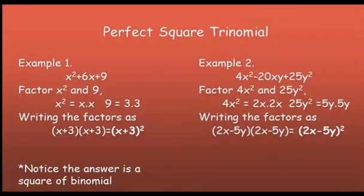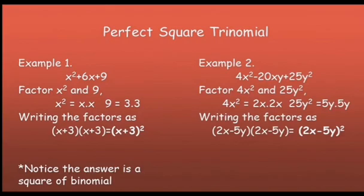Perfect square trinomial. Example: x squared plus 6x plus 9. Factor the first and last terms: the factors of x squared are x times x, and 9 is 3 times 3. Writing the factors as the quantity x plus 3 times the quantity x plus 3, we have the quantity x plus 3 squared.